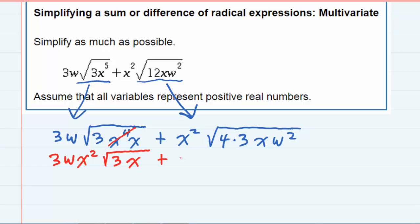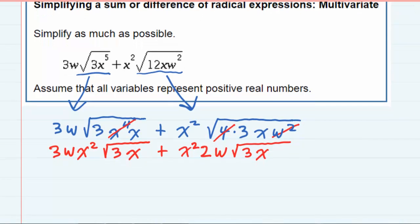In the next expression, the 4 comes out as a 2, because the square root of 4 is 2. And the w^2 is an even exponent, so I can bring it out as a w^1, leaving me with the 3 and the x still underneath the radical, because they're not perfect squares.